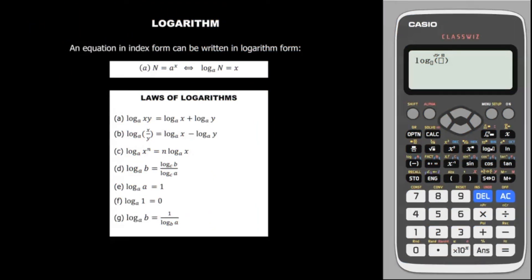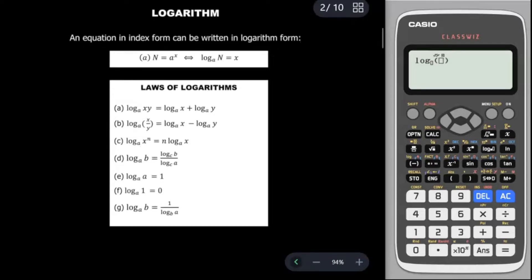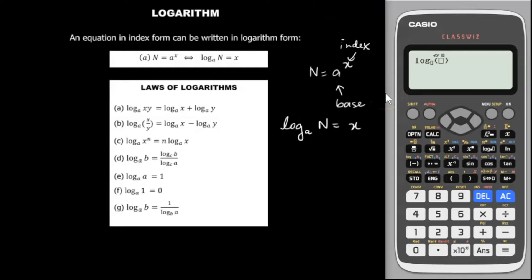An equation in index form can be written in logarithm form. When it's in index form, it will be n = aˣ, where a is the base and x is the index or power. When you want to change this to logarithm form, you write log base a of n equals x — the index x moves to the right-hand side.